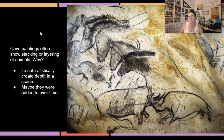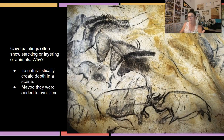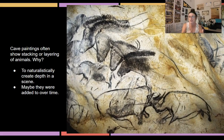Another thing commonly seen in cave paintings is stacking — animals appearing stacked one on top of another. There are two main theories: it could represent animals standing in a row or running in a pack, going for a naturalistic herd appearance, or these were added onto over time by different people who came in and increased the number of animals depicted. We don't know for sure, but it's likely one of those reasons.